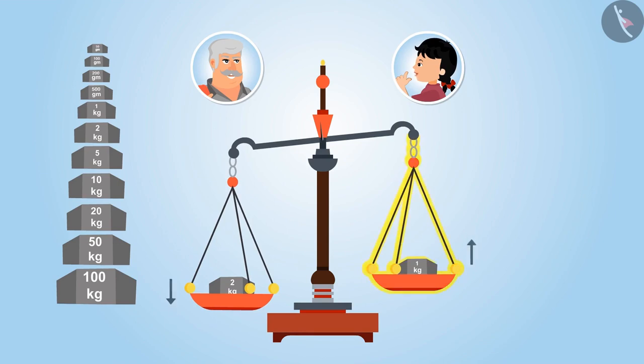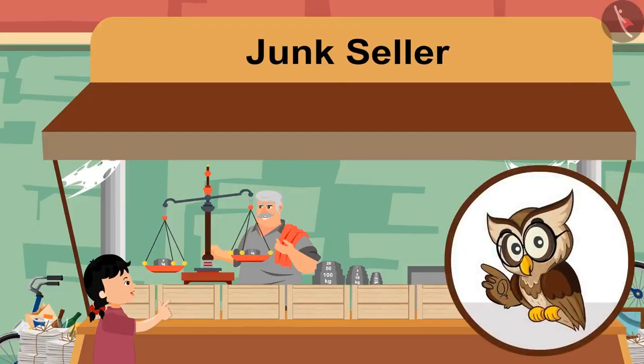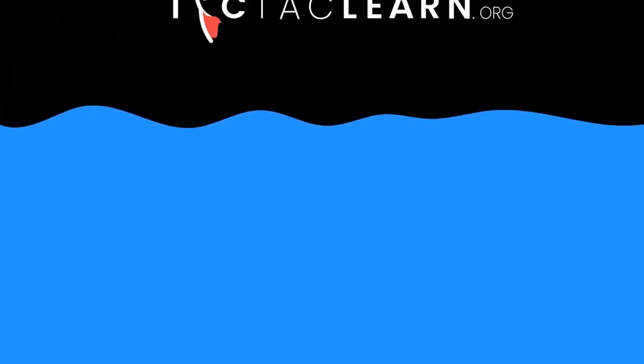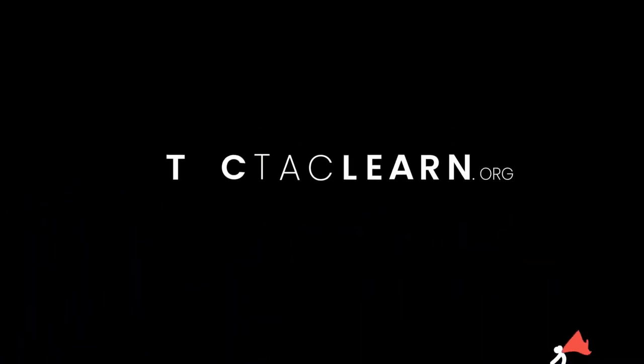Exactly. Now you have learnt it properly. So kids, have you understood? In weighing scale, heavier weight moves downwards and lighter weight moves upwards. In this video, we have learnt about some common mistakes while measuring weight using the weighing scale.